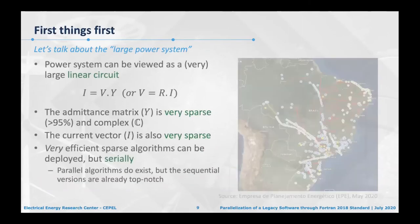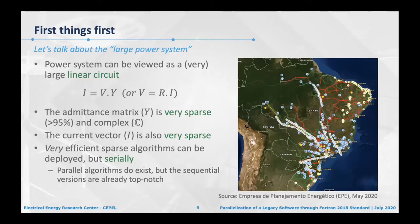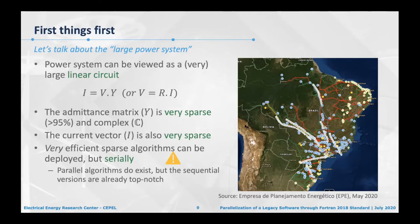Our power systems can be viewed as a very large linear circuit with a simple equation: current equals admittance matrix times voltage, similar to V = R·I from high school physics. The admittance matrix is a very sparse, complex matrix, similar to a connectivity matrix from graph theory, and the current vector is also very sparse. Very efficient sparse algorithms can be deployed, but they are usually sequential. The sequential versions of these algorithms are already top-notch, so I will not try to parallelize the linear system solution — I would not gain big benefits from it.